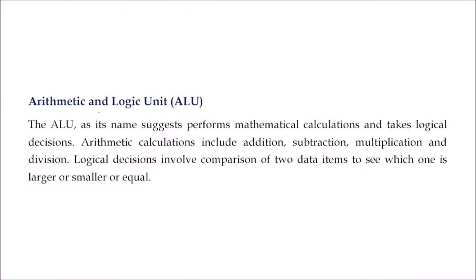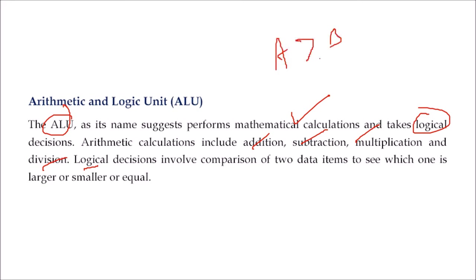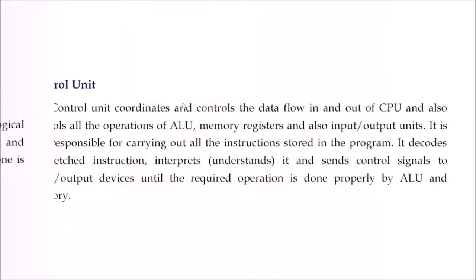The ALU — Arithmetic Logic Unit — performs mathematical calculations and various logical decisions. Arithmetic calculations include addition, subtraction, multiplication, and division. Logical operations include comparisons such as which is smaller, which is greater — for example, A is greater than B, or A is not equal to B.